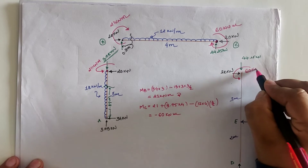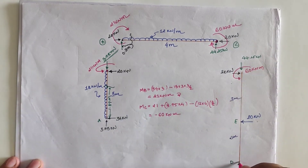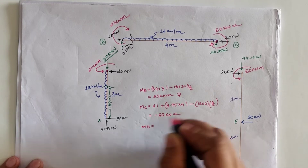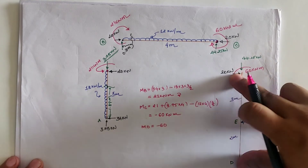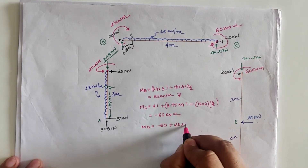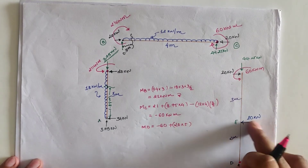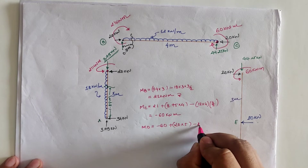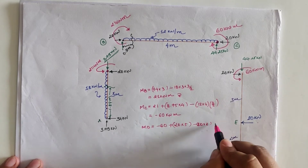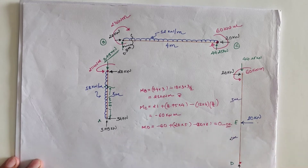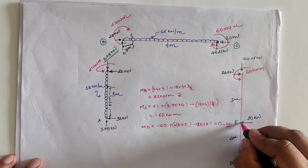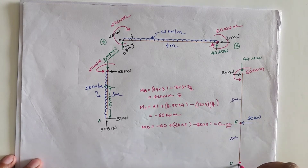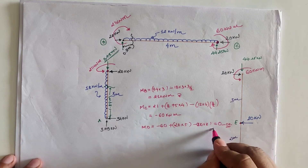Taking moment at location C: 21 kN·m clockwise is already there; plus 3.75×4 clockwise from the support reaction; minus 12×4×(4/2) anticlockwise from the UDL, giving minus 60 kN·m. This means we apply a clockwise moment of 60 kN·m at C. For joint equilibrium at C in the CD span, we apply the opposite 60 kN·m. Verifying at location D: minus 60 (anticlockwise) plus 20×5 (clockwise) minus 20×2 (anticlockwise at E) equals 0, confirming the moment at D is zero.